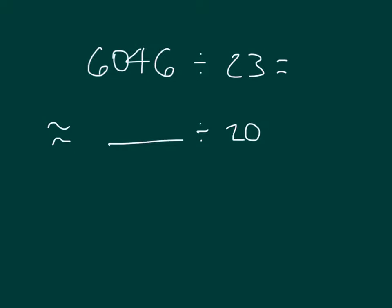Now our next step is to look at 6046, and let's round it so it's easy to divide by 20. So what we can do is we can look for an easy fact, where it is that we're looking at what is easily divisible by 2, or that two tens there. And so we have 6 easily divisible by 2, so 6046 close to 6000.